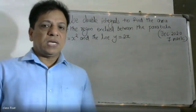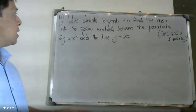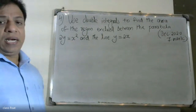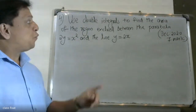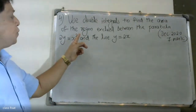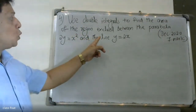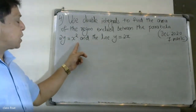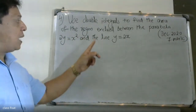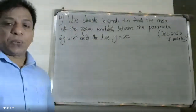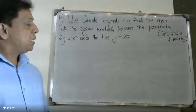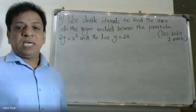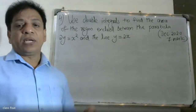Good morning students. At the university questionnaire, use double integral to find the area of the region enclosed between the parabola 2y = x² and the line y = x. This is a December exam period, 7-mark question.